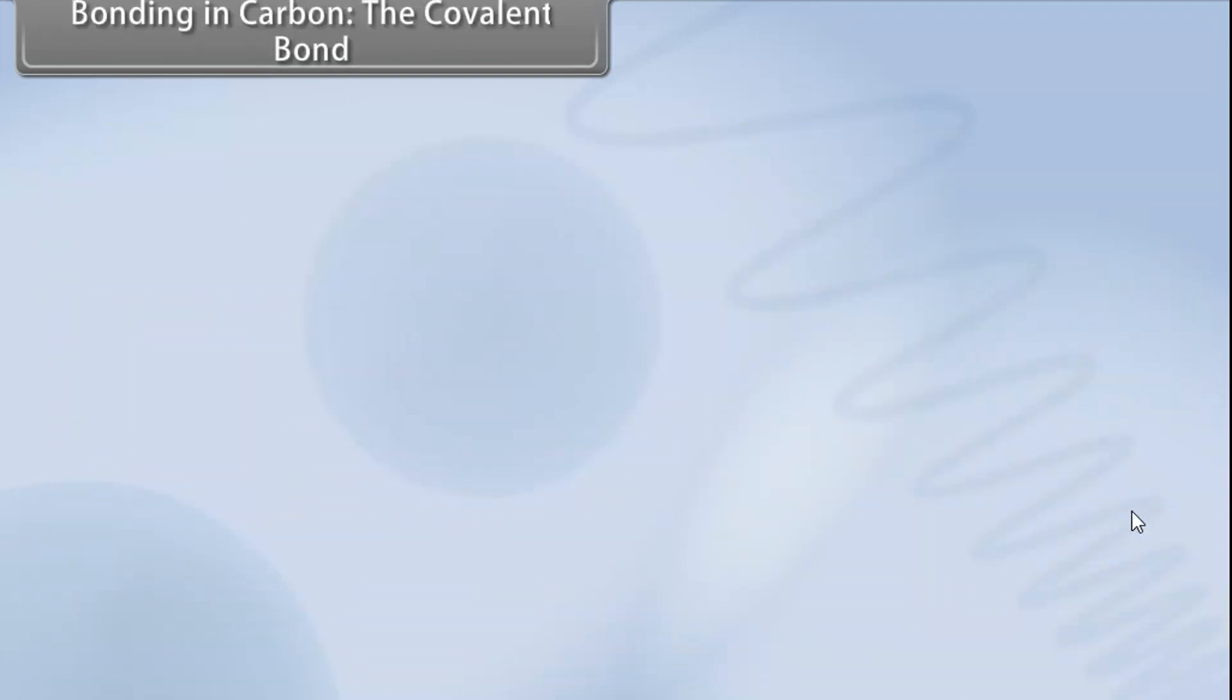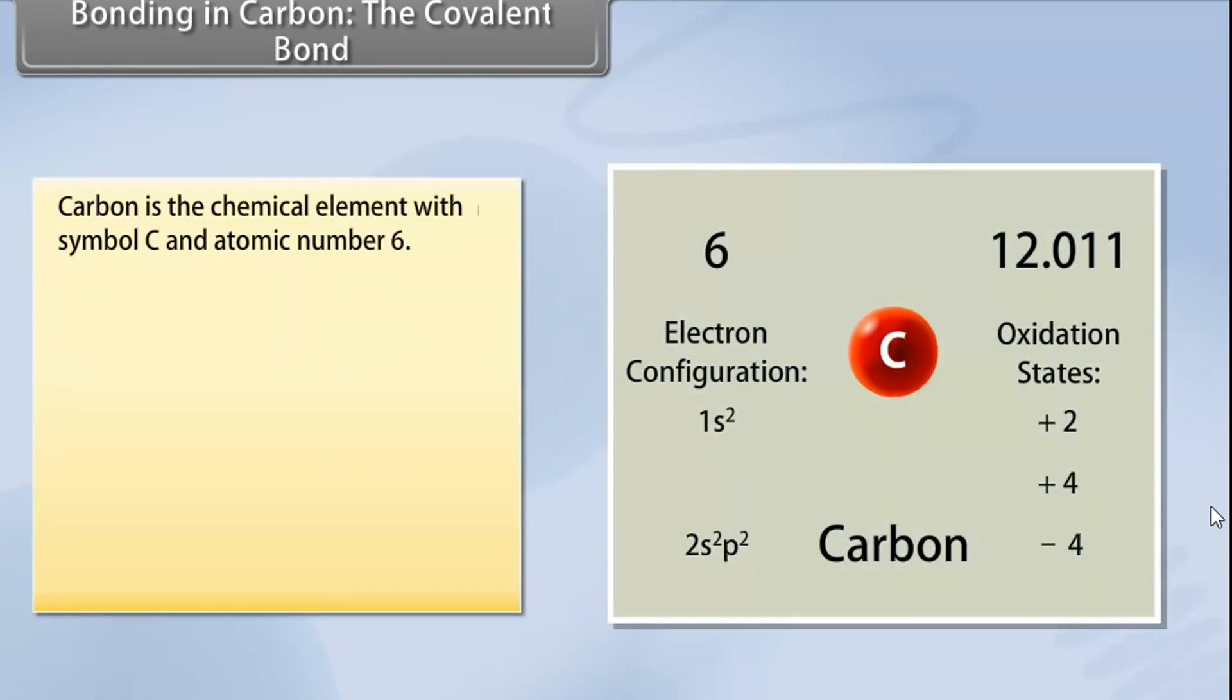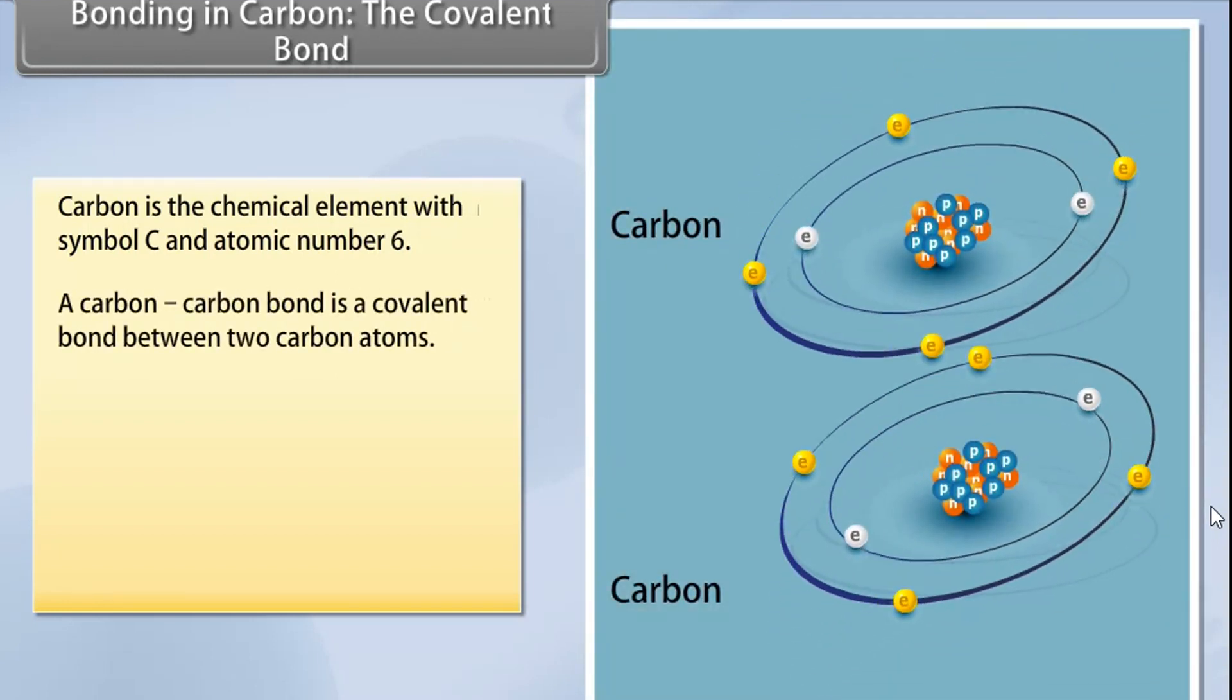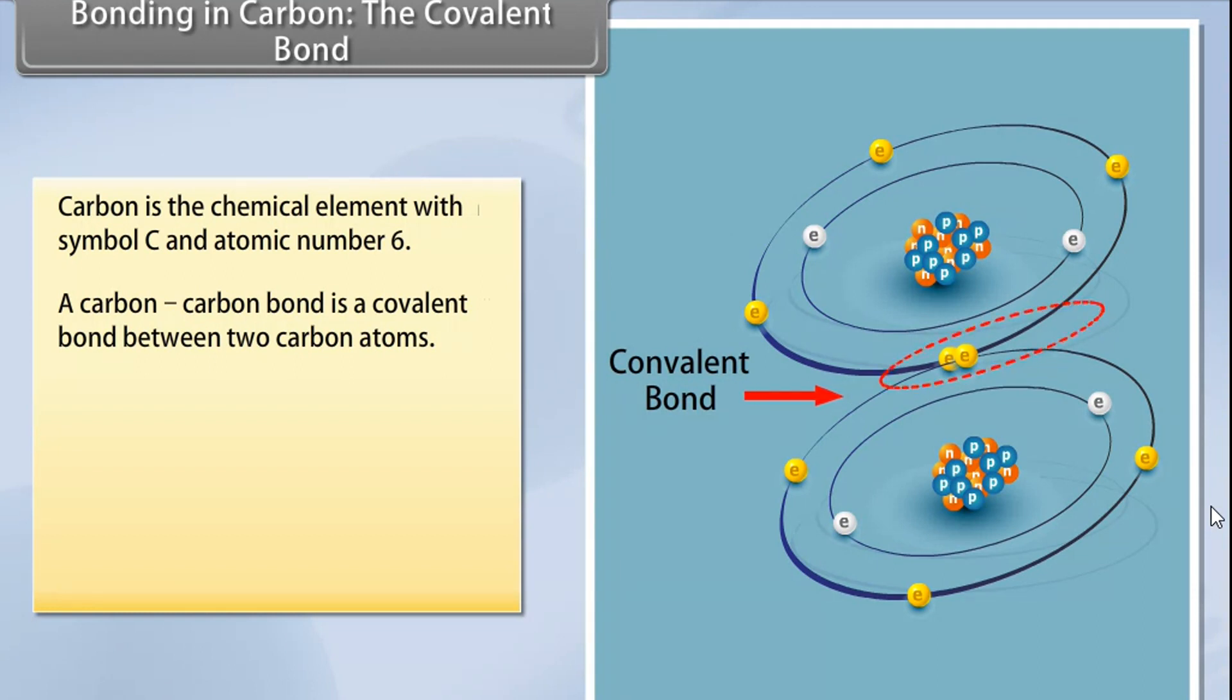Bonding in carbon: The covalent bond. Carbon is the chemical element with symbol C and atomic number 6. As a member of group 14 on the periodic table, it is non-metallic with 4 electrons available to form covalent chemical bonds. The most common form is the single bond, a bond composed of 2 electrons, one from each of the 2 atoms.